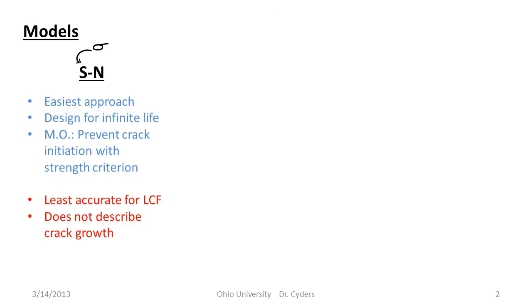We have a couple of different ways of modeling this. The model we are going to deal with the most is called the SN approach, or the stress-life approach. This is the easiest approach to take because there are some very simple mathematical models involved. We can do a lot from first-principle concepts to project the life of a part over a series of loadings. This allows us to design for infinite life with certain materials — things like certain steels and titanium have a point at which fatigue isn't going to be the mode of failure. The modus operandi is generally to prevent crack initiation with some strength criterion. This is the least accurate method for low cycle fatigue — it really can't describe low cycle fatigue, and it doesn't do anything to describe crack growth.